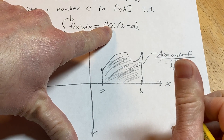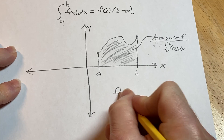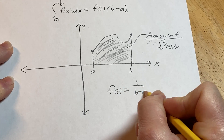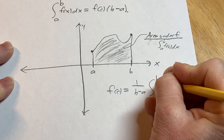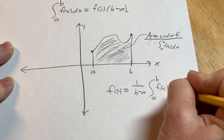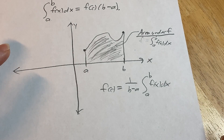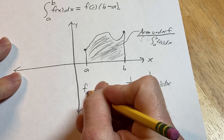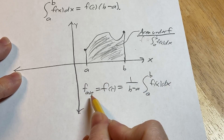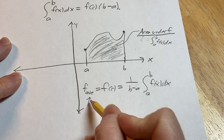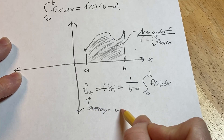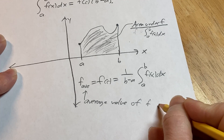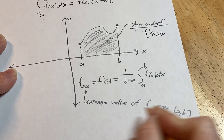Now, f(c) equals 1 over (b minus a) times the definite integral from a to b of f(x) dx. This expression is also defined as f_ave, called the average value of a function — specifically, the average value of f over the interval [a, b].